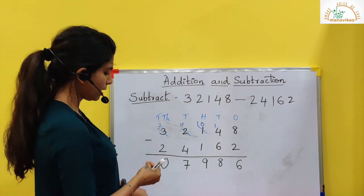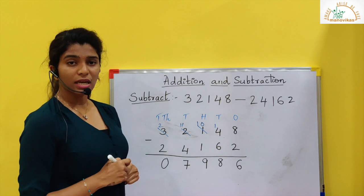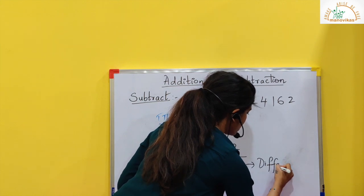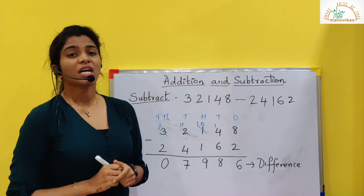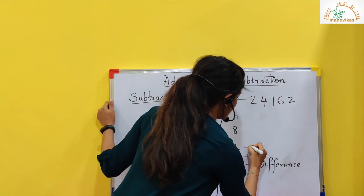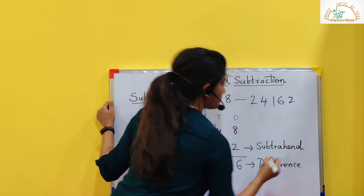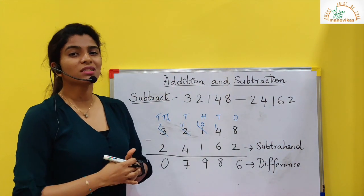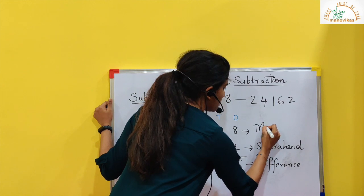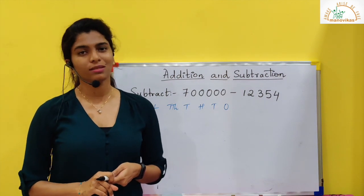We got a result. The result — what we get after subtraction is called as difference. The number which is being subtracted is called as subtrahend.